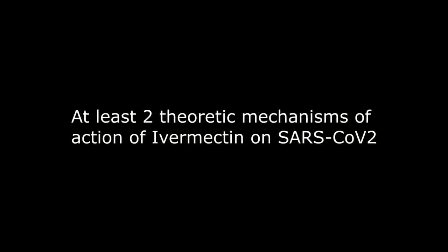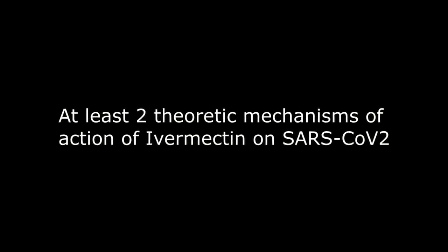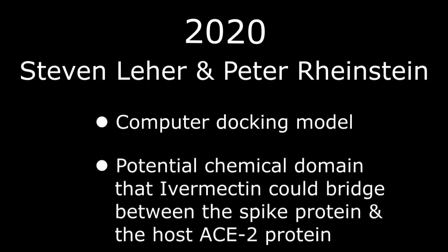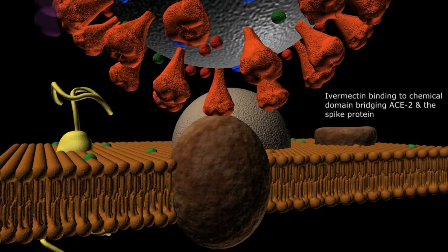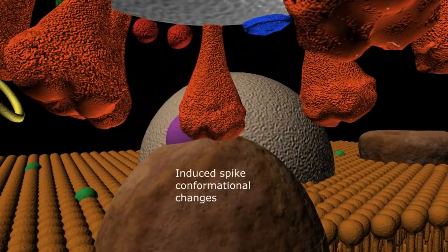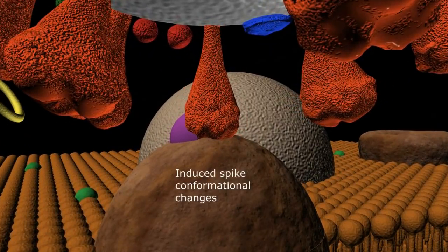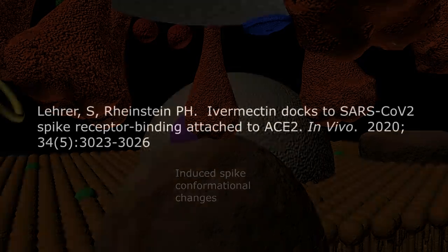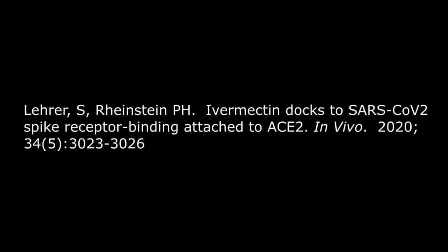There are at least two theoretic mechanisms of action of ivermectin on SARS-CoV-2 infection. In 2020, Stephen Lehrer and Peter Reinstein utilized a computer docking model and were able to demonstrate a possible chemical domain that could be bridged by ivermectin between the SARS-CoV-2 spike protein and the adjacent ACE2 surface protein of the host. This bridging may result in conformational changes in the spike glycoprotein that could interfere with viral access to the host cell and thus prevent viral replication. The authors published their results in the journal In Vivo in October 2020.